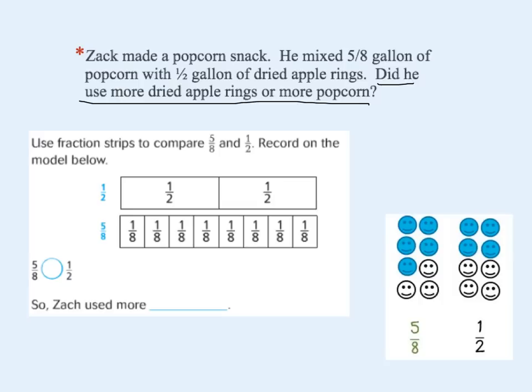One way to compare fractions is to use fraction strips — we'll compare five-eighths and one-half and record on the model. Since he has five-eighths gallons of popcorn, I'm going to come down to where the eighths are; this is my popcorn. And he used a half gallon of dried apple rings — I'll just call that apple rings. Let's go ahead and mark what we know: he has five-eighths gallon of popcorn, so I'm going to shade in five-eighths.